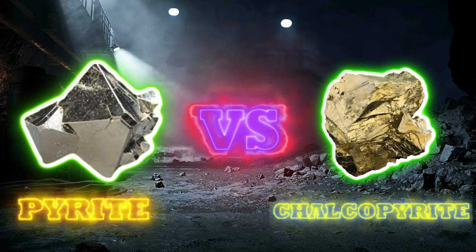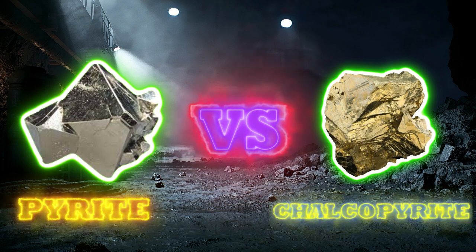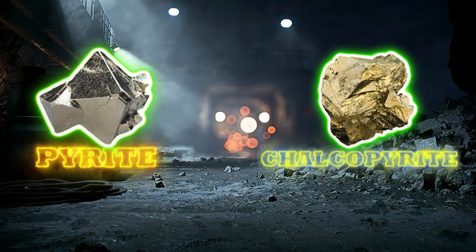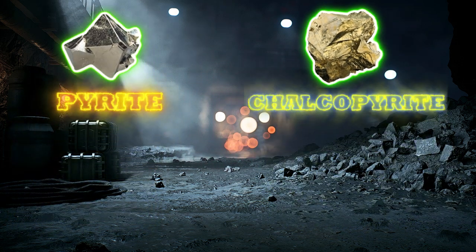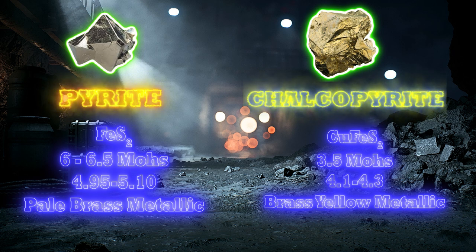Pyrite vs chalcopyrite: these minerals are known to be similar to each other. After all, they are part of the same mineral group known as the sulfides, given the presence of sulfur in their chemical formulae. However, some key features allow us to distinguish between the two of them. For example, chalcopyrite contains copper in its formula, and pyrite doesn't.